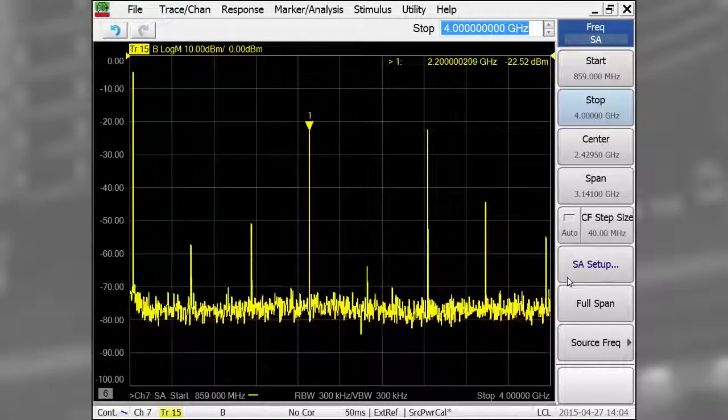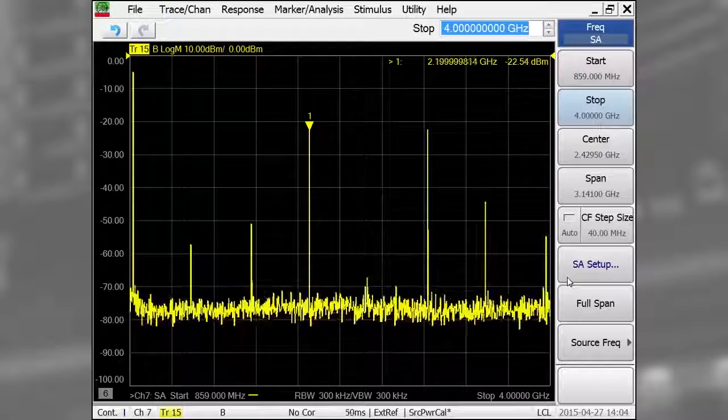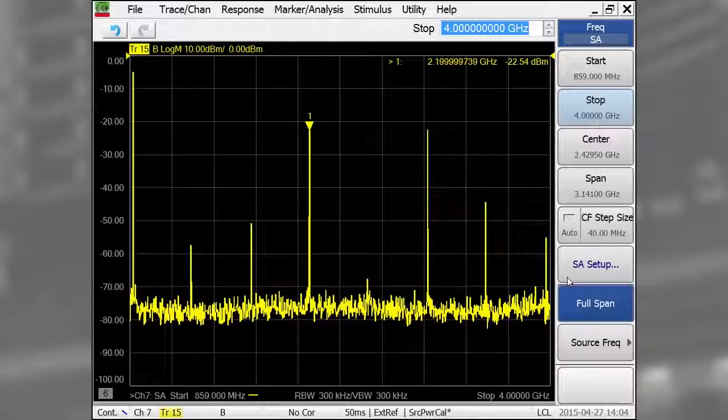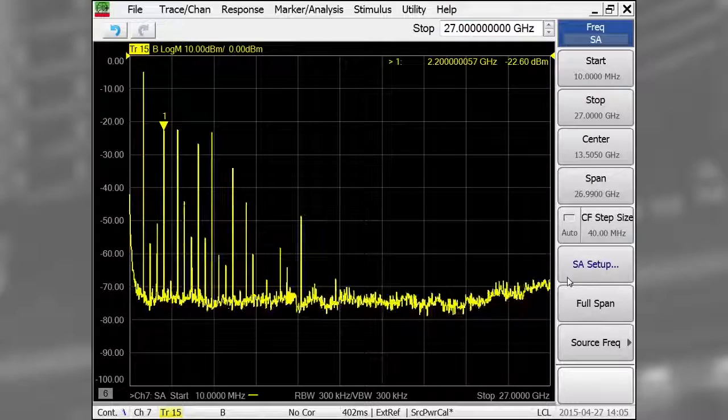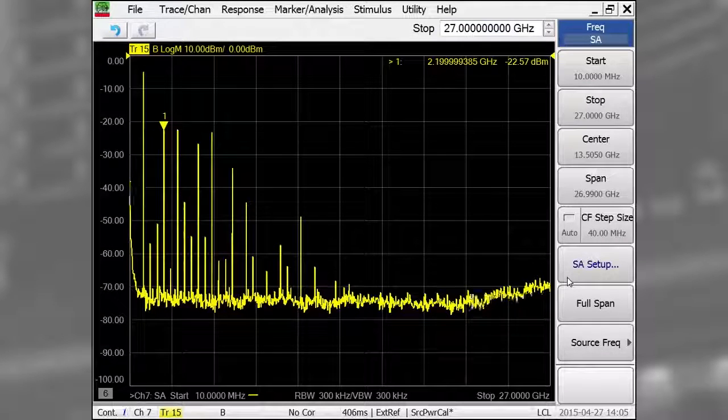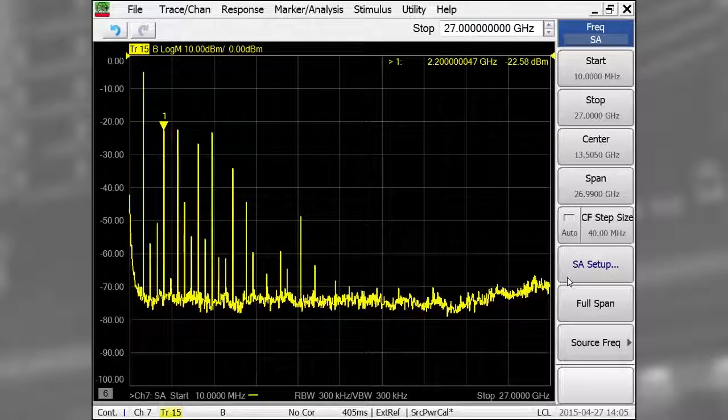It looks like there are other spurious signals coming out of the converter, so I'll press the full span soft key to look further out in frequency. Now I see the full range of spurious products coming out of the converter.